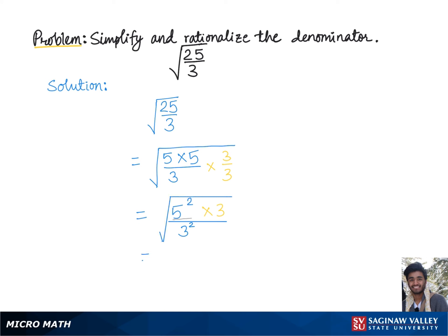Now this 5 squared can be pulled out of the square root as simply 5, and we have root 3. Similarly this 3 squared can be pulled out of the square root as 3. That's 5 root 3 over 3 is the final answer.